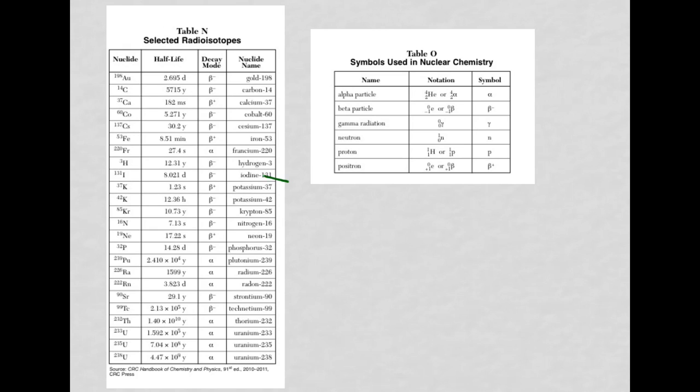We're looking for potassium-37, and it happens to be here on the table. You're writing in the decay mode. You can just write it in as this beta symbol positive. So it's a positron, but it's beta positive decay. Just put the B with the plus sign.